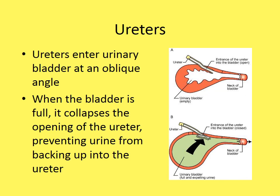The ureters enter the urinary bladder at an oblique angle. When the bladder is full, it collapses the opening of the ureter, preventing urine from backing up toward the kidneys — a critical protective mechanism demonstrated in the accompanying diagram.